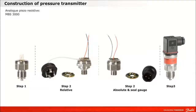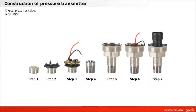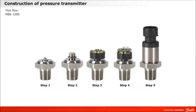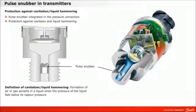Danfoss pressure transmitters are constructed in three different ways. Danfoss uses a pulse snubber to protect the sensing element against cavitation and liquid hammering.